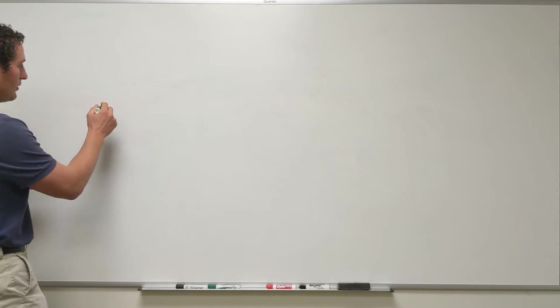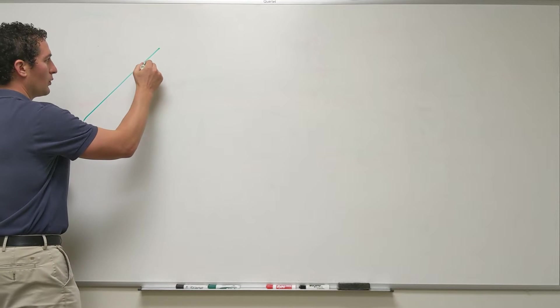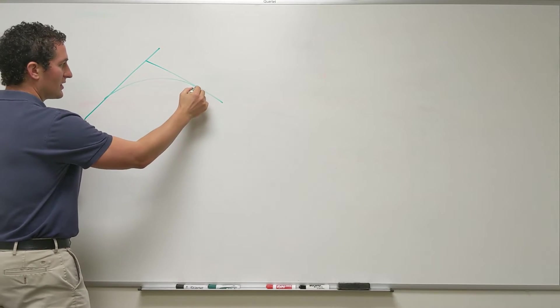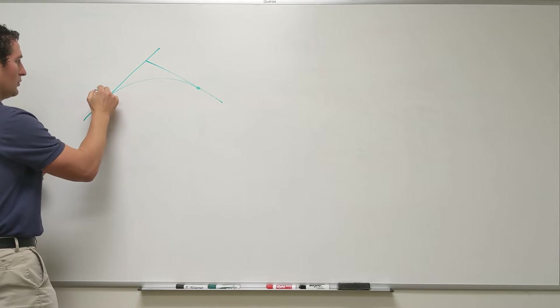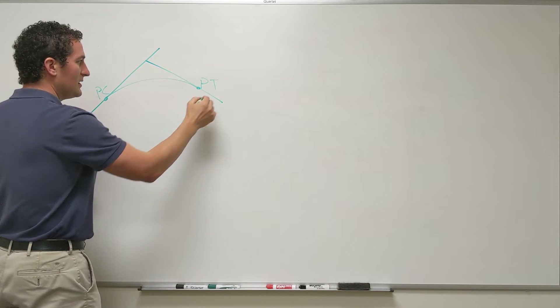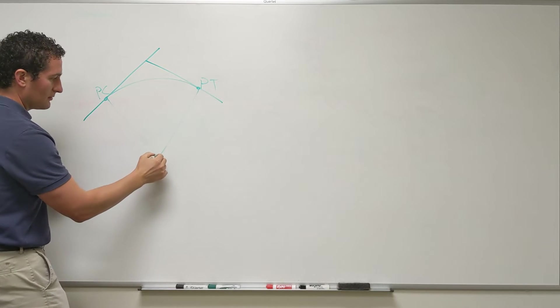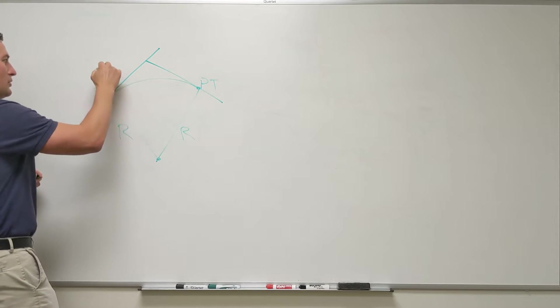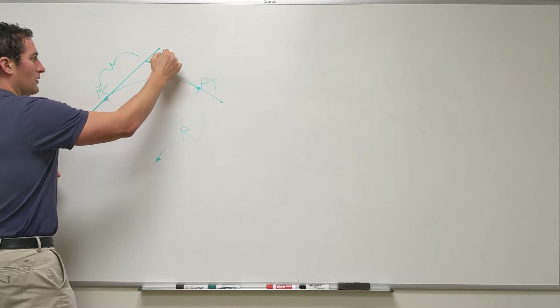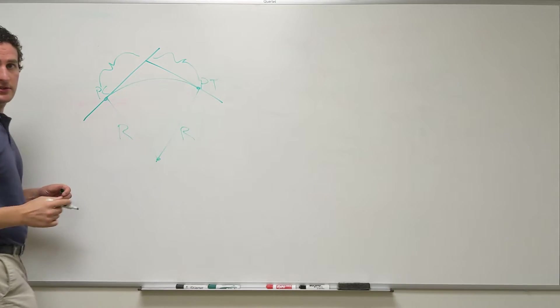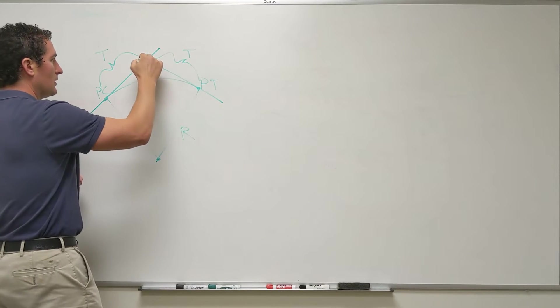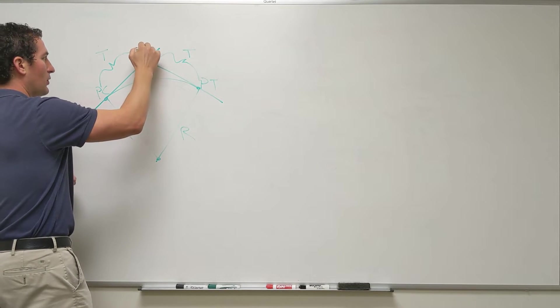So when we're looking at a horizontal curve, we're going to see our tangents, we're going to see our radius that connects them, we know there's the PC and the PT, we can even look at the radius that connects those. We know these distances for a simple curve is the tangent. We know this point is the point of intersection.